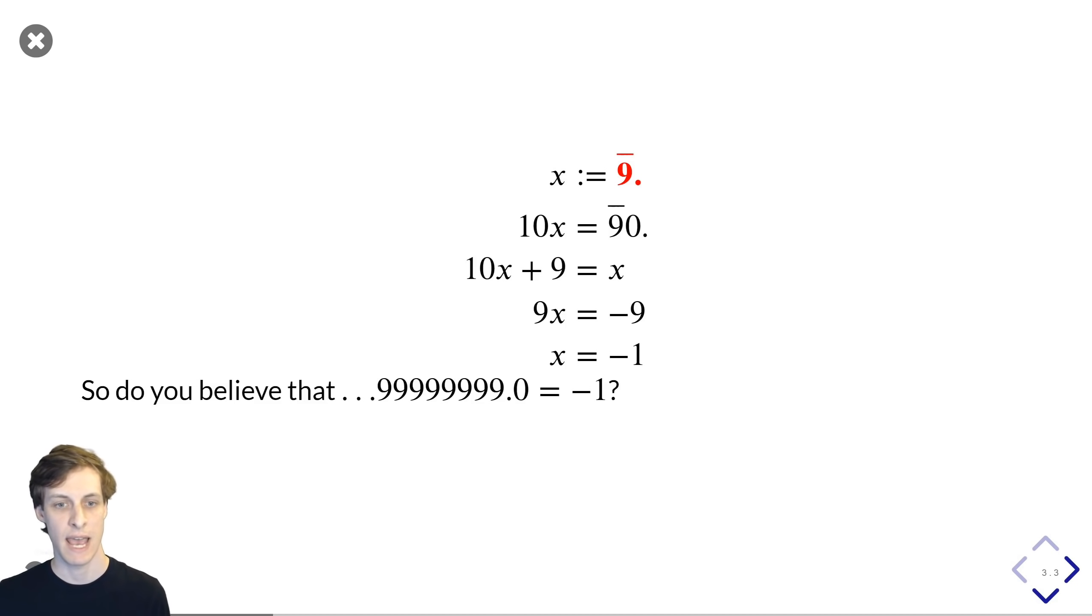I start with 9 repeating, I multiply by 10, I add 9 and I see that I end up back with the number that I started with. So then I can solve for that algebraically and I get that x is minus 1. Pause the video and check the steps if you want. So do you believe that 9 repeating point is equal to negative 1?